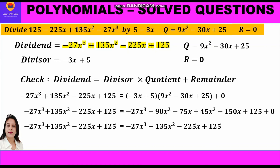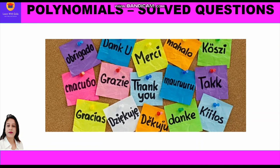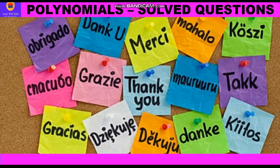Combining like terms on the right-hand side: −27x³ stays, 90x² + 45x² = 135x², −75x − 150x = −225x, and 125 + 0 = 125. The right-hand side equals −27x³ + 135x² − 225x + 125, which is exactly equal to the left-hand side. The division algorithm is satisfied and our answer is correct. Please like and subscribe to the channel, and do give your feedback in the comments!